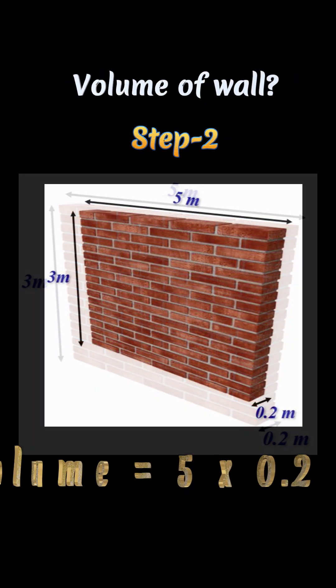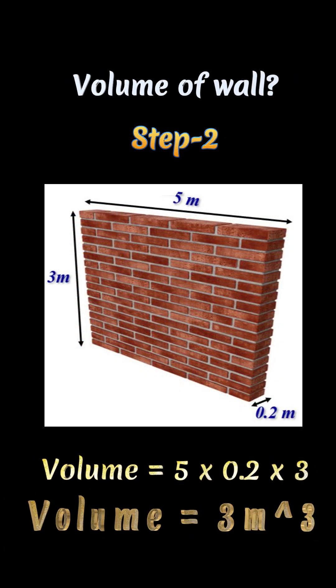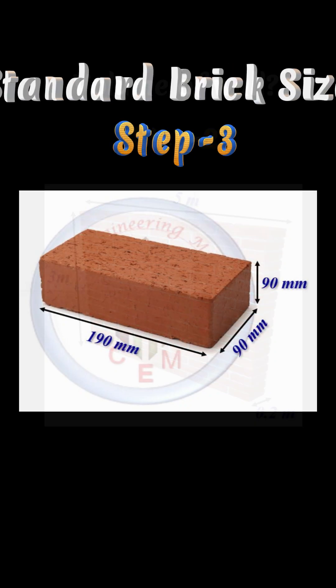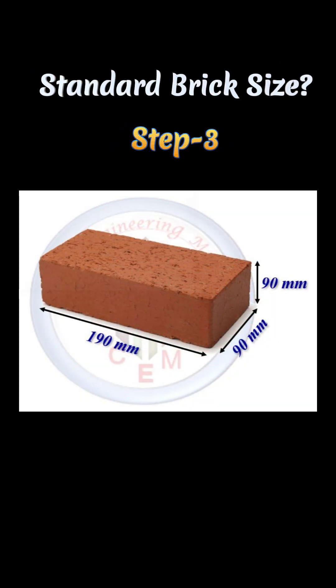Step two: calculate the volume of the wall. Volume is equal to L×B×H. Length is five meters, width is 0.2 meters, and height is three meters, so volume is equal to three meter cubed.